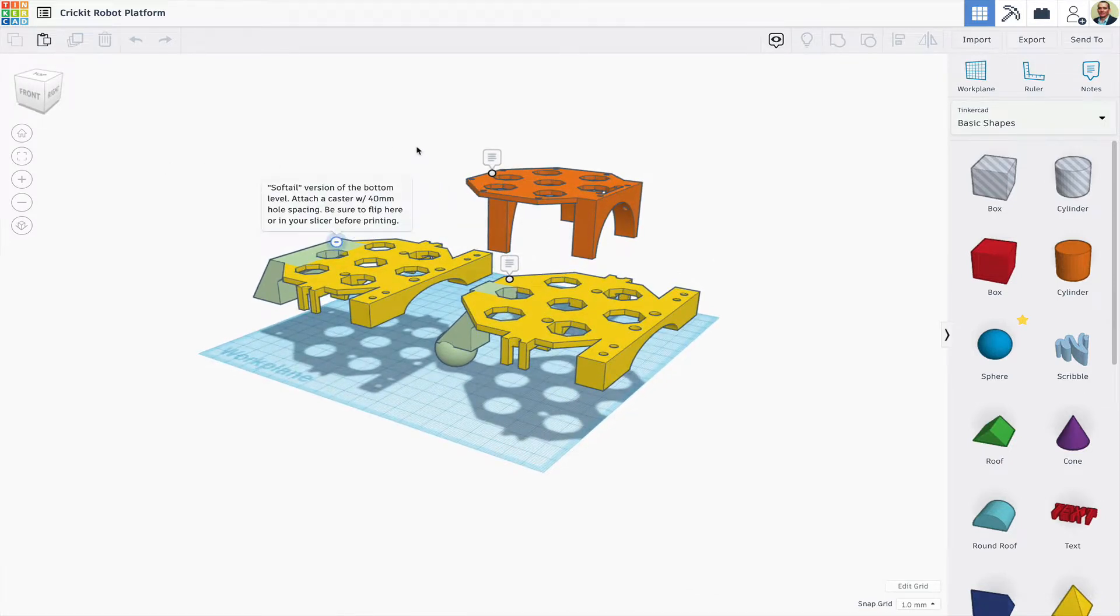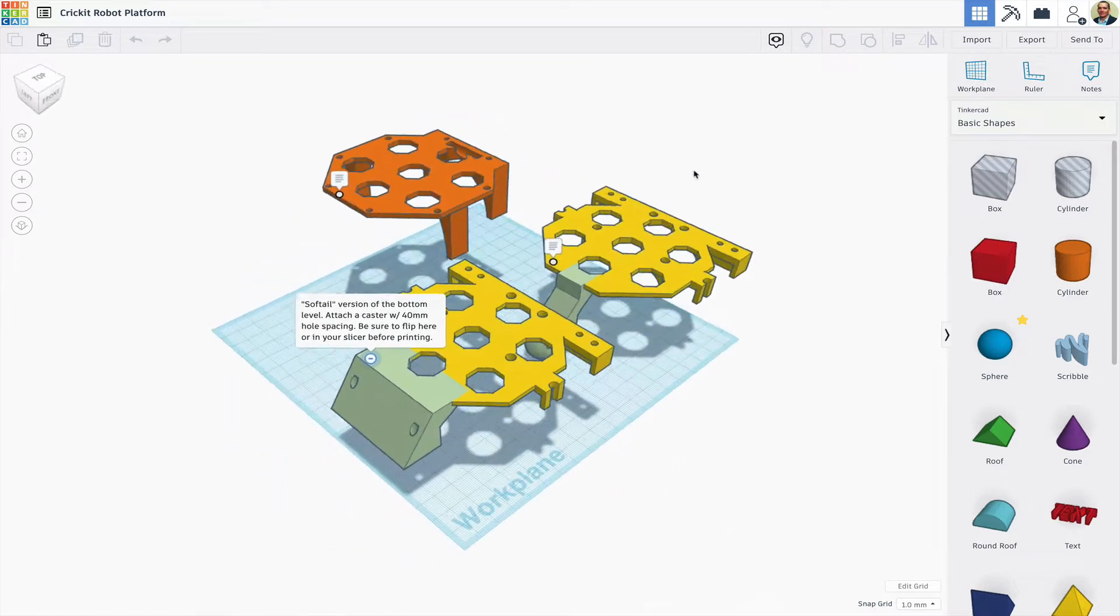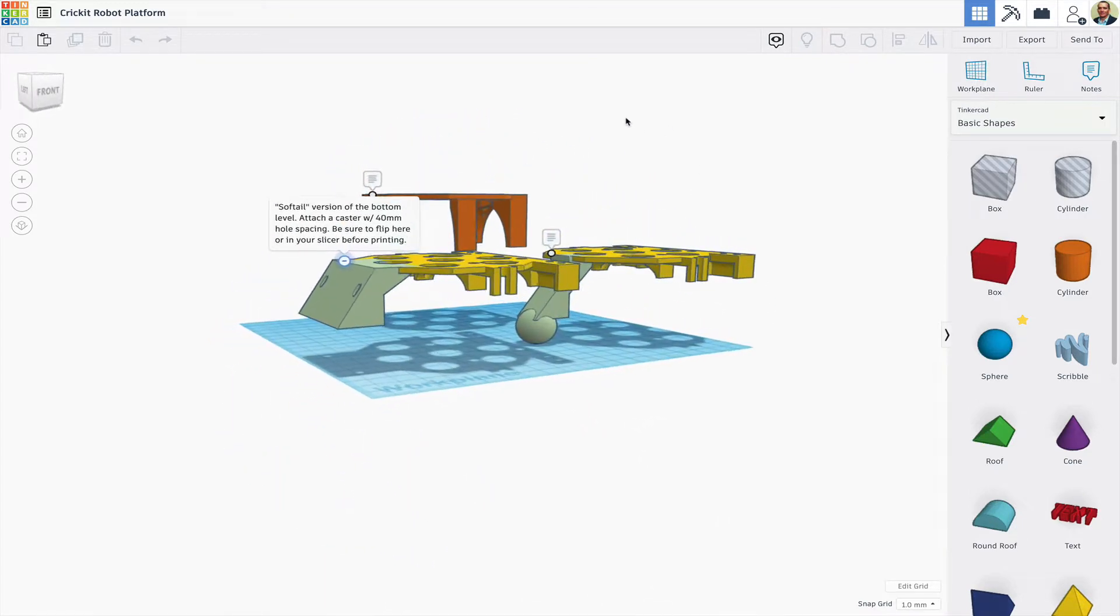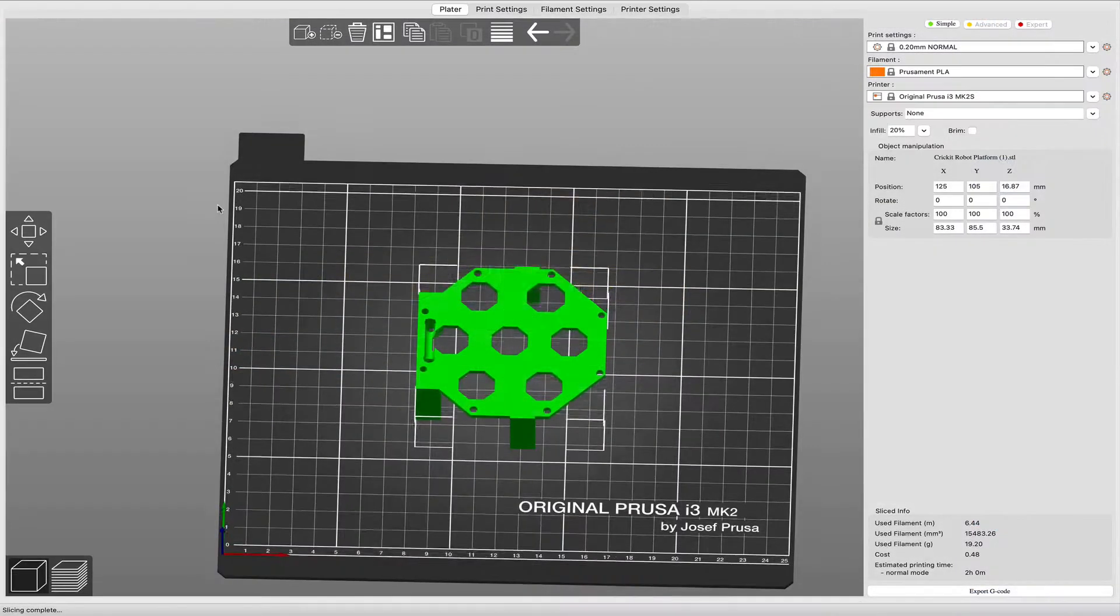On the right is the hardtail version so you wouldn't need a caster wheel, and on the left is one with holes spaced 40 millimeters apart so you can zip tie in a caster wheel if you're using one.